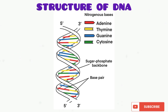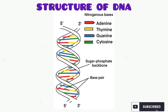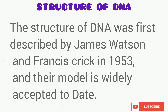Let's talk about the structure of DNA. As you can see from the diagram, DNA is like a twisted ladder. This structure is called the double helix structure. The structure of DNA was first described by James Watson and Francis Crick in 1953.